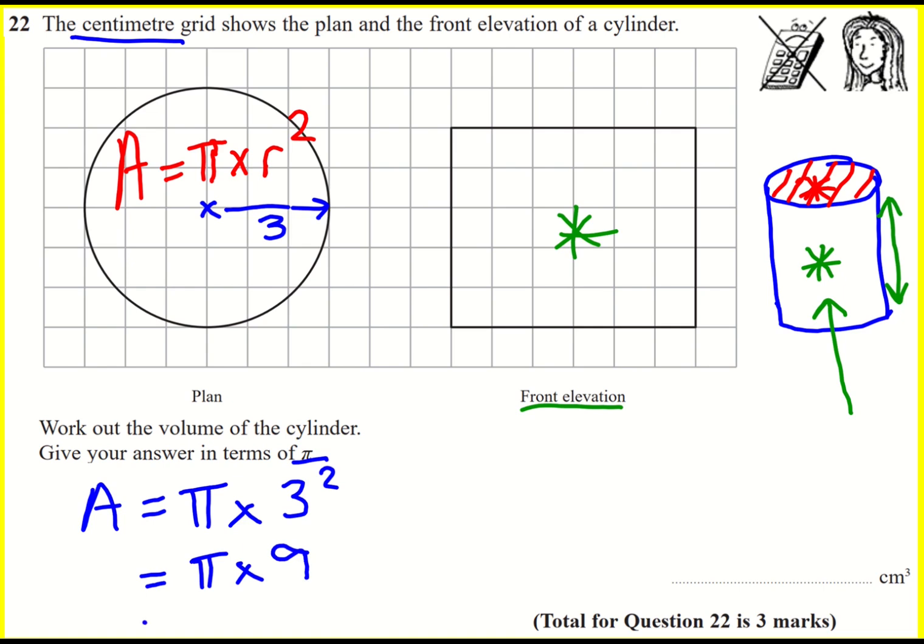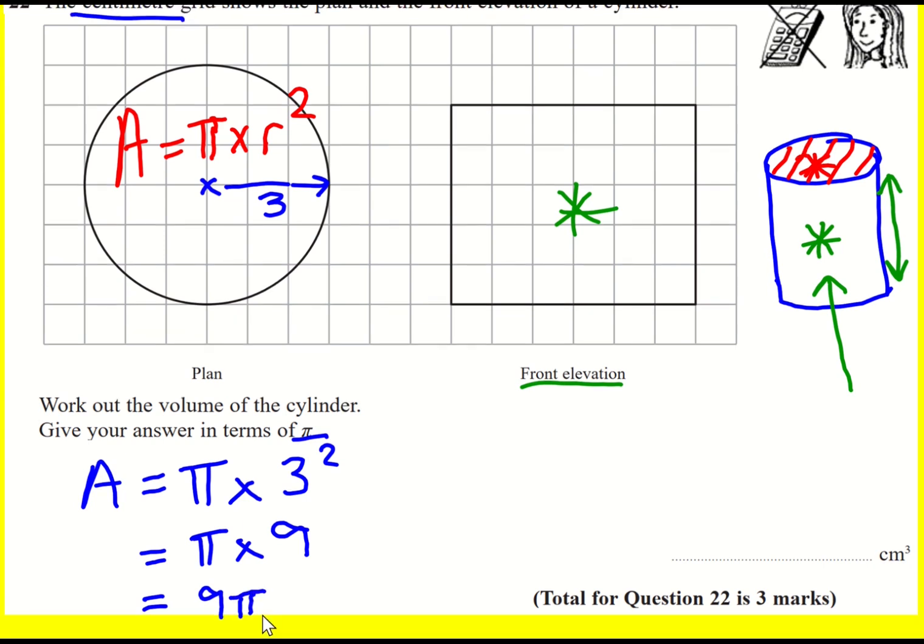Writing this differently, well not very differently, I'm just going to sort them around and say nine pi. Because remember when two things are squashed together in algebra it means there's a times sign between them, and I'm just changing around the order of the number and the pi symbol. That's just convention in terms of algebra—you put your number first, so nine pi. So the area of this top, the cross-sectional area, is nine pi.